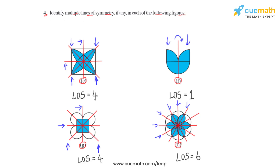These are the different ways to find multiple lines of symmetry for a given set of figures, when the figures are themselves symmetrical and based on their orientation. This is how we answer question number four.